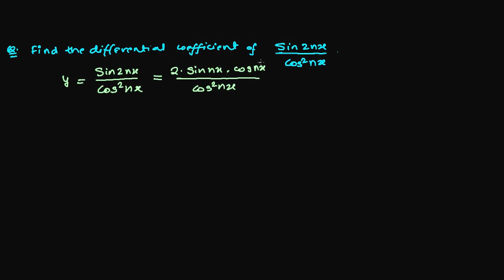What you can cancel? You can cancel this cos nx with this power and you'll be left with 2. So y equals now you have 2 sine nx over cos nx. So y equals 2 tan nx.